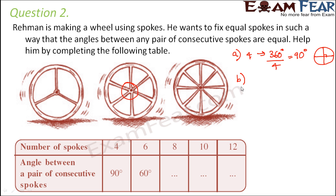Similarly, when you divide it into 6 spokes, then each angle becomes 360 divided by 6 which is equal to 60 degree. So each angle is 60 degree.